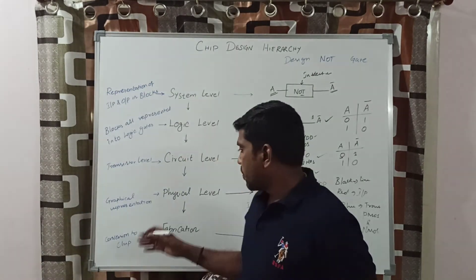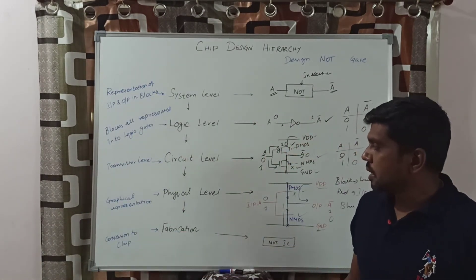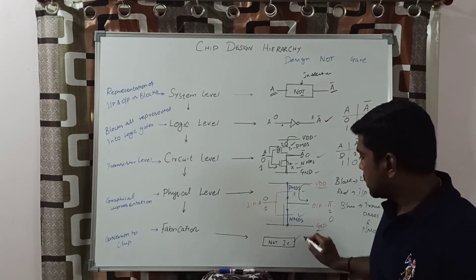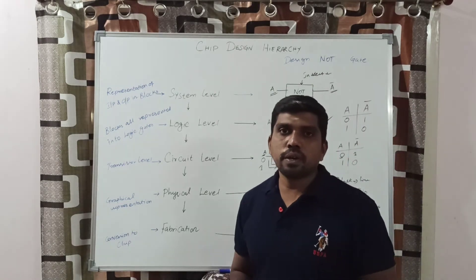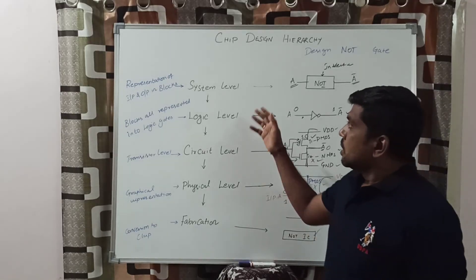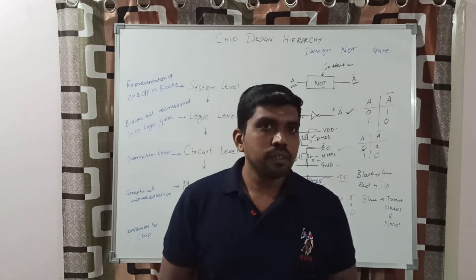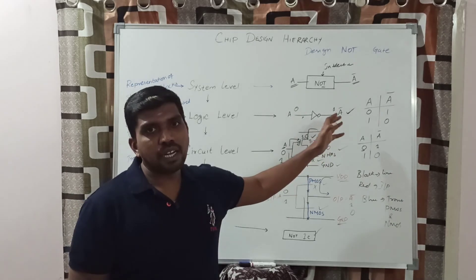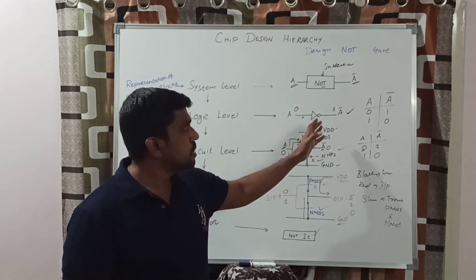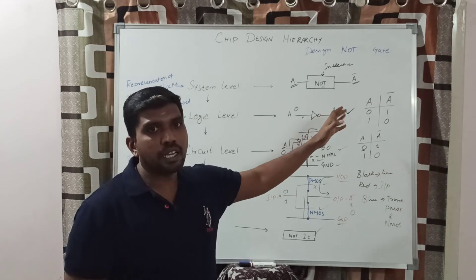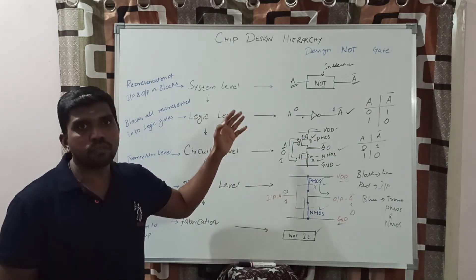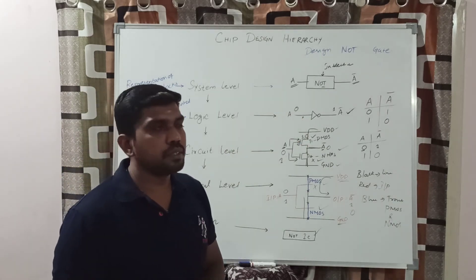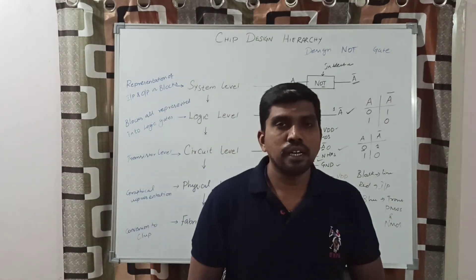The final level is fabrication, where the physical design is converted into a chip. At each and every level, you check the output value compared with the truth table value to verify valid or invalid output. If the circuit produces an invalid output, you go back to that level, modify the circuit, and check again with the truth table. This is the basic function of chip design hierarchy.